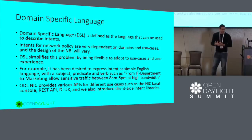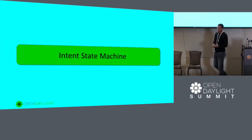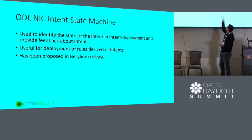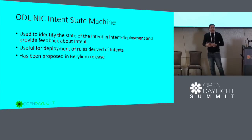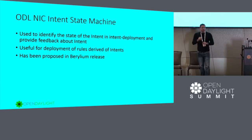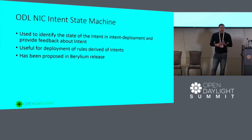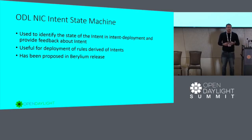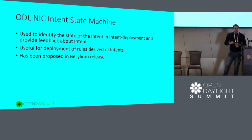Another great feature added on the Beryllium release is the Intent State Machine. This Intent State Machine is used to identify the state of the intent and then provide feedback about the intent. Currently, when we create an intent using NIC, this intent will be deployed just in time, right now. If I create an intent to allow all traffic between A and B, the OpenFlow rules will be applied immediately. But we don't have tracking for this intent. The idea here is to keep track of all original intents and give feedback to the user about the state. We have the engine for the Intent State Machine already implemented in Beryllium, where all intents start as undeployed.